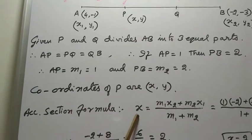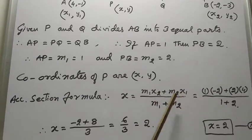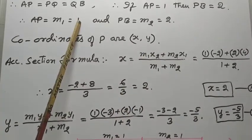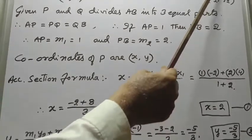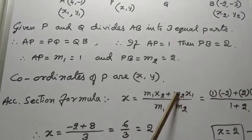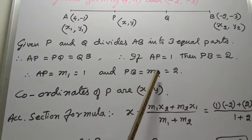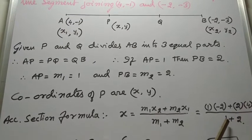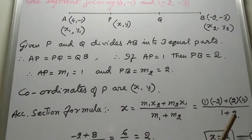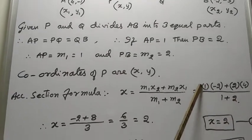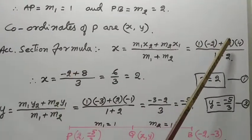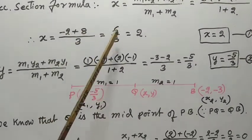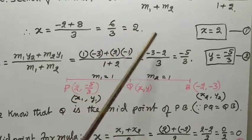Use the section formula: X equal to (M1·X2 + M2·X1) divided by (M1 + M2). Substitute the values: M1 is 1, X2 is -2, M2 is 2, X1 is 4, divided by M1 + M2 = 1 + 2 = 3. Remove the brackets: plus into minus gives minus 2, plus 2 into 4 gives plus 8, divided by 3. So -2 + 8 = 6 divided by 3 equals 2. Therefore X equal to 2.